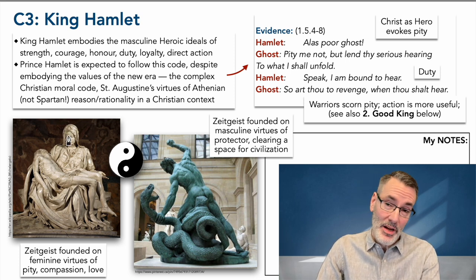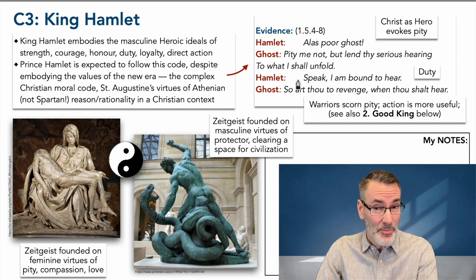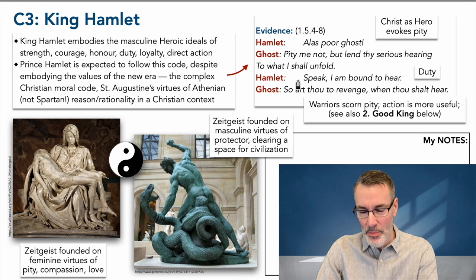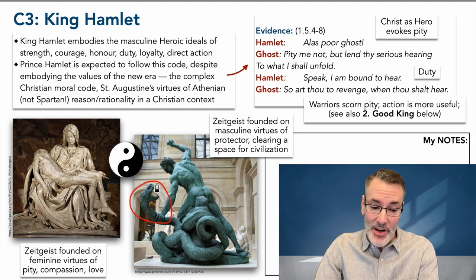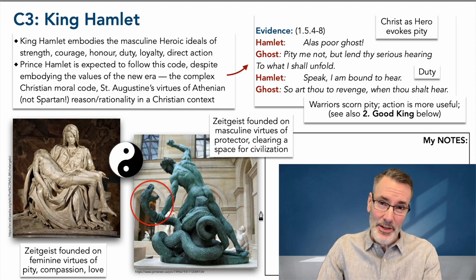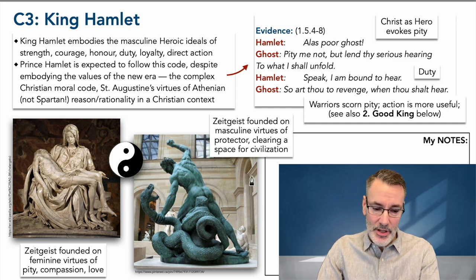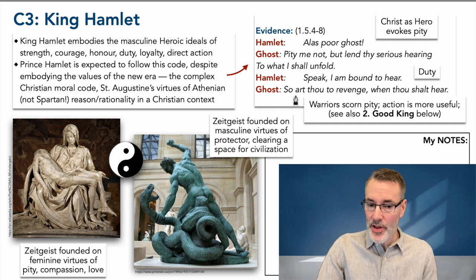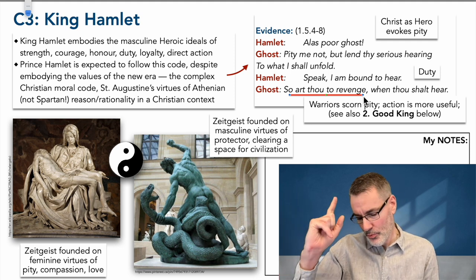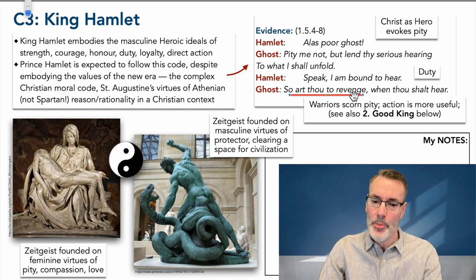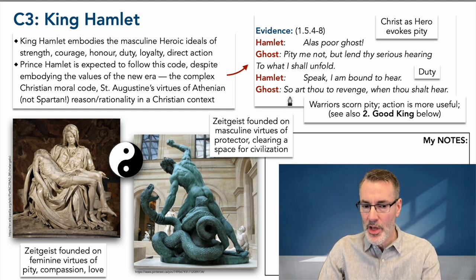I'm not saying that the feminine Hamlet has no virtues — he really does. As I've mentioned, Fortinbras says Hamlet was a good, smart guy, and if the world had been a different place, he might have been a really good peacetime leader. But the snakes — that's Claudius — and Hamlet's not the kind of guy to clear the world of Claudius snakes. That's the tragedy of this play. The ghost says: 'So art thou bound to revenge.' He's calling on Hamlet from the grave to do the warrior's job — to avenge his murder. Warriors scorn pity; action is more useful. And it's not wrong — it's not the entire picture, but it's not wrong.